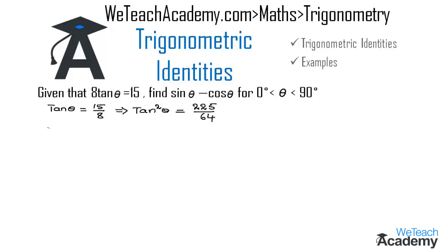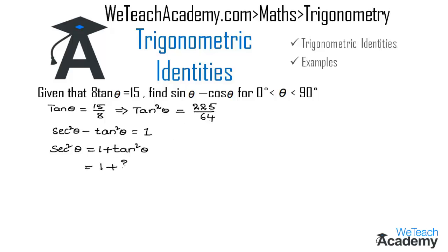Let us use the identity secant square theta minus tan square theta is equal to 1. To find the value of secant square theta, we transfer tan square theta to the right hand side, giving secant square theta equals 1 plus tan square theta. Substituting the value of tan square theta, we get 1 plus 225 divided by 64, which simplifies to 64 plus 225 divided by 64, giving 289 divided by 64 as the value of secant square theta.